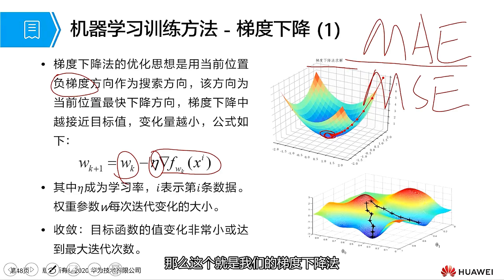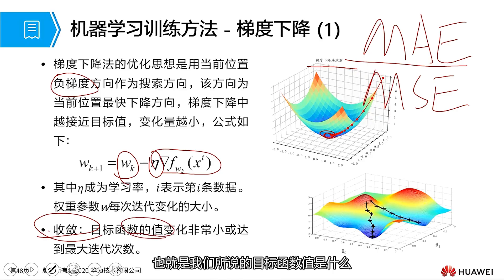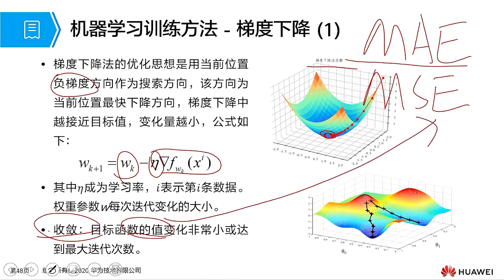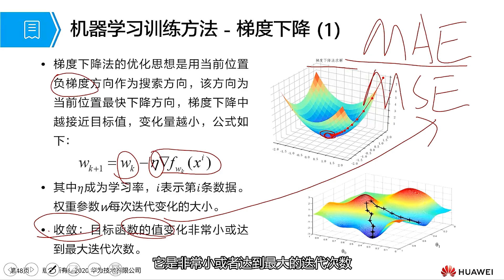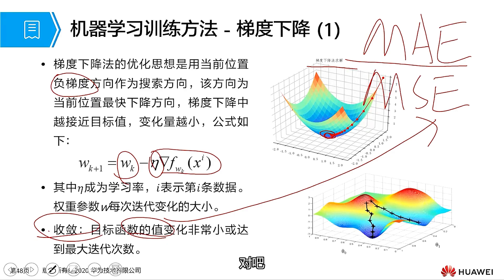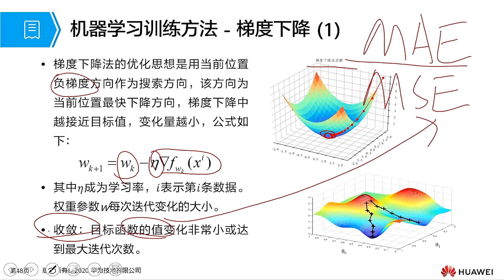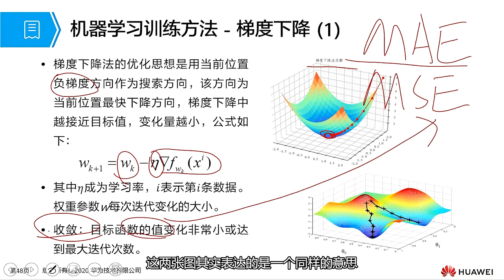So this is our gradient descent method. Can everyone understand this? The result achieved is called convergence — where the objective function value, which is the MSE value, becomes very small, or we reach the maximum number of iterations. Everyone, please pay attention: sometimes we may just not be able to reach that minimum value, and we wouldn't let the computer keep calculating forever. So we set a maximum number of iterations — for example, a thousand times — and stop once we reach that number.